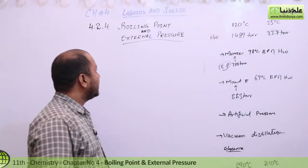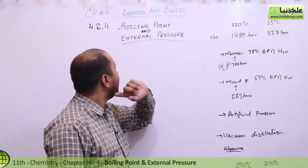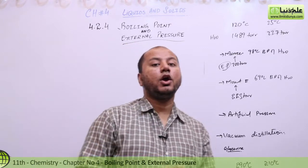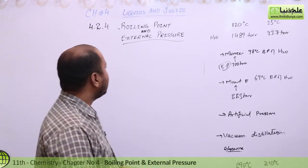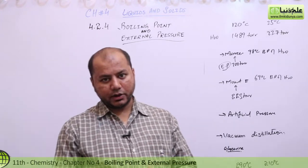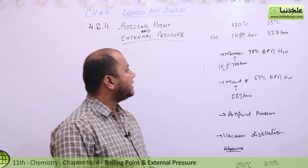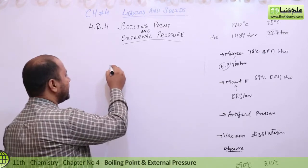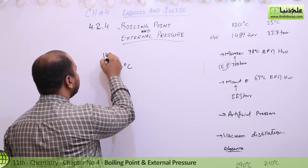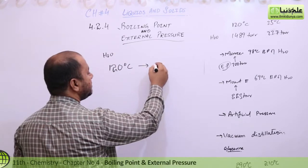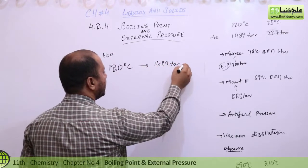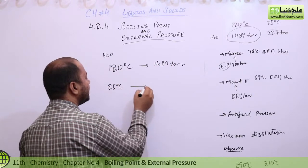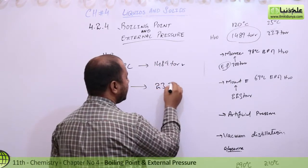Students, today we are going to talk about boiling point and external pressure — what the relationship between them is. Boiling points are dependent on external pressure. For example, water at 120 degrees Celsius has a pressure of 1489 torr. At room temperature, say 25 degrees Celsius, the pressure is 23.7 torr.